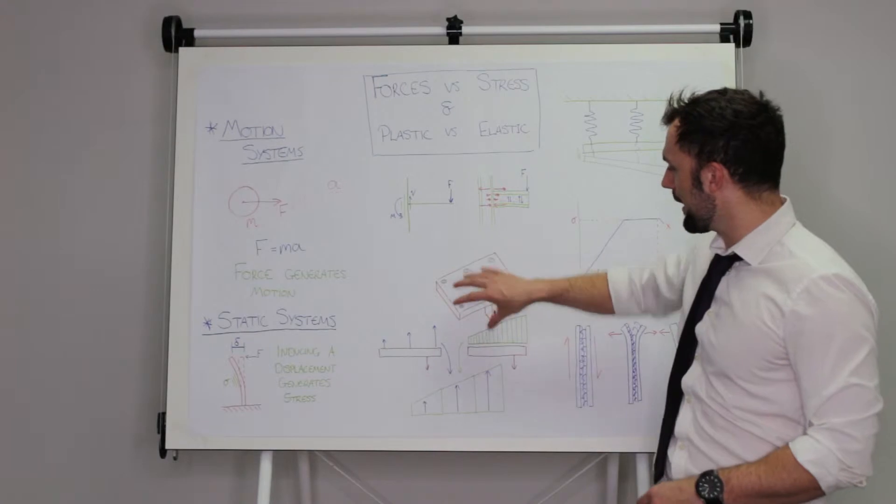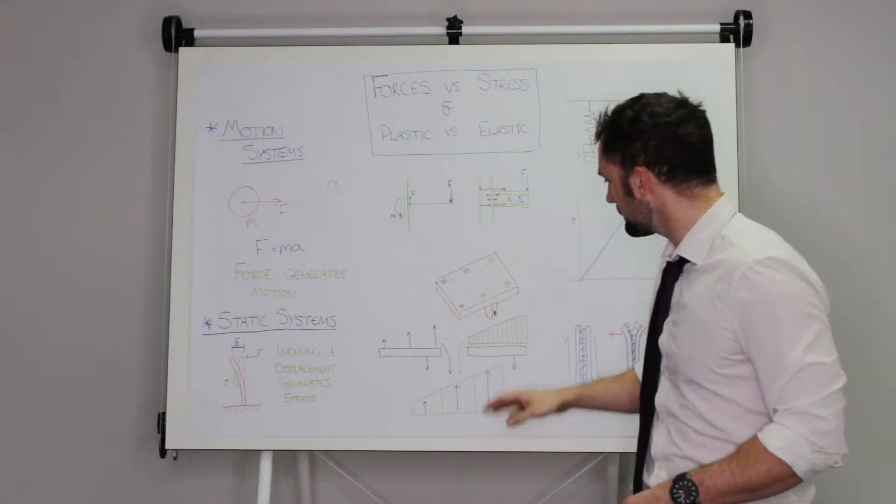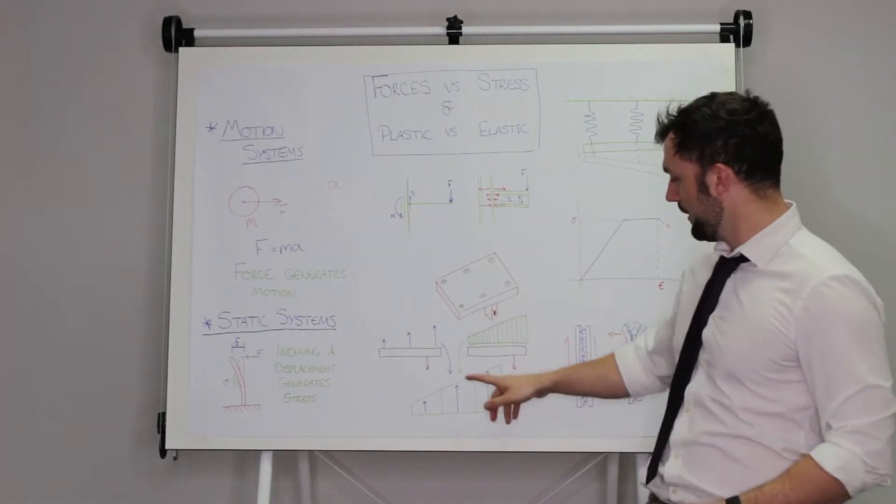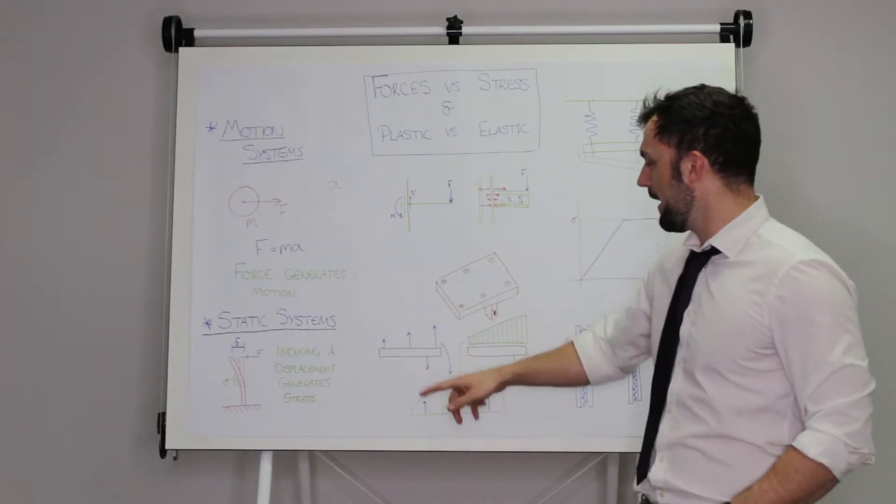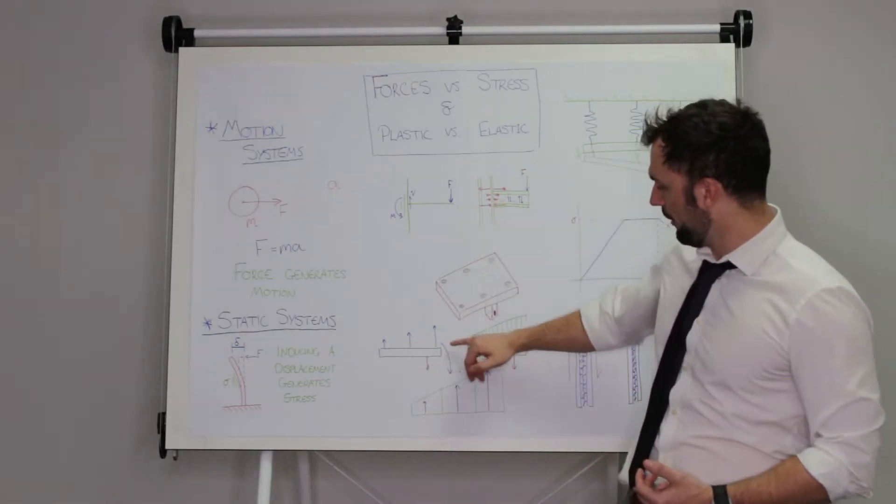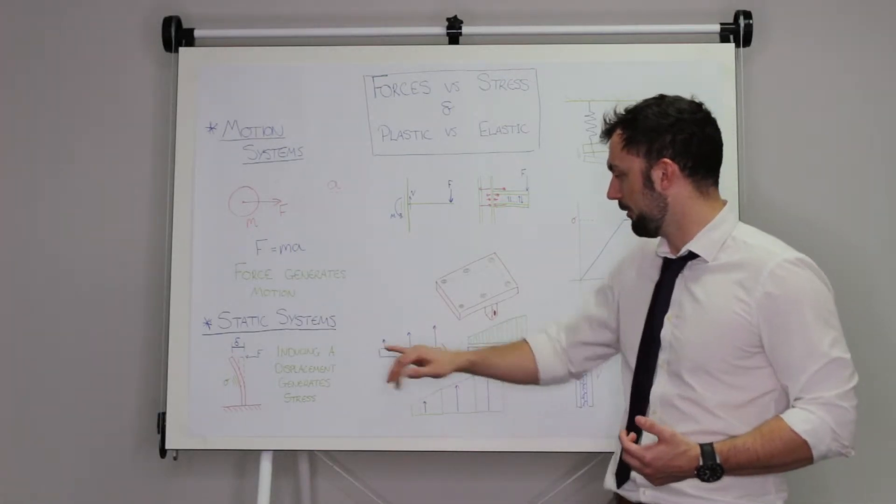I've got an example here of a bracket that may be bolted or glued to the ceiling, let's say, with these sets of bolts. We have an offset force—it's slightly over to this side. I think everyone can naturally assume that because the force is more over this way, the bolts at this side will be doing a little bit more work. You'll have a high stress here and a low stress over that side.